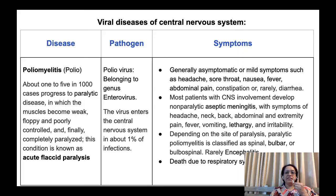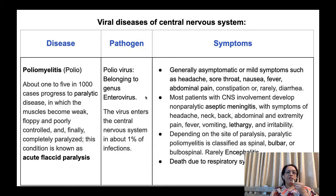Most patients with central nervous system involvement develop non-paralytic aseptic meningitis, with symptoms of headache, neck and back pain, abdominal pain, extreme pain, fever, vomiting, lethargy, and irritability. Depending on the site of paralysis, paralytic poliomyelitis is classified as spinal, bulbar, or bulbospinal poliomyelitis. Encephalitis occurs very rarely and may lead to respiratory failure. Upon recovery, a high morbidity rate is observed — the effects of paralysis are seen throughout the patient's lifetime. There is no treatment for this disease.